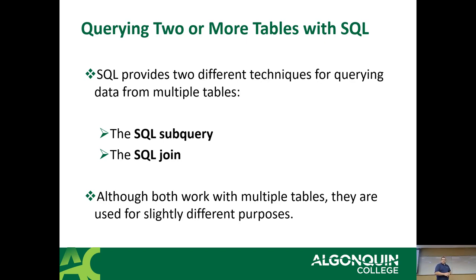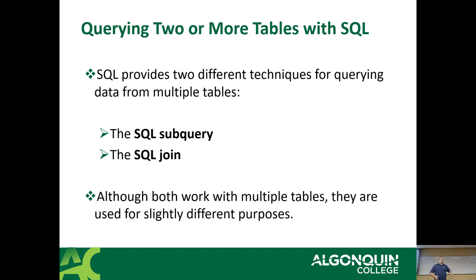Today we're going to cover two separate topics - two different ways to pull data from multiple tables at once. The first one is the subquery and the second one is the join. Both subqueries and joins work with multiple tables, but they're used for different purposes. Sometimes people get lazy and abuse subqueries because they don't understand how to do joins, but they really don't do the same thing and they have different performance impacts.